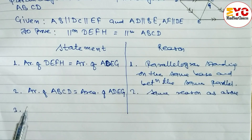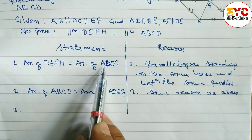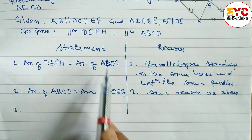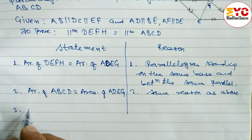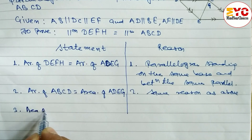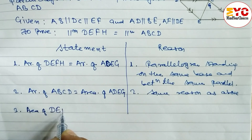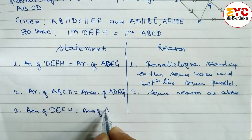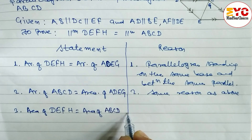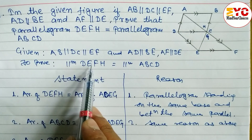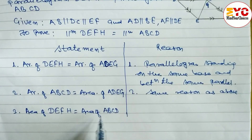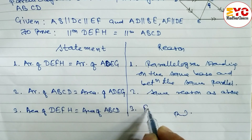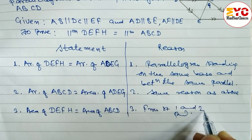In step number three, since ADEG appears on both sides, the two equations give us: area of parallelogram DEFH is equal to area of parallelogram ABCD. This is exactly what we had to prove. From statements one and two — proved.